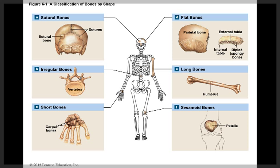Today we're going to discuss Chapter 6, Osseous Tissue and Skeletal Structure. We'll talk about the functions of the skeletal system, classification of bones, and bone structure.